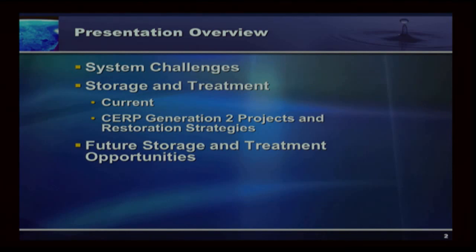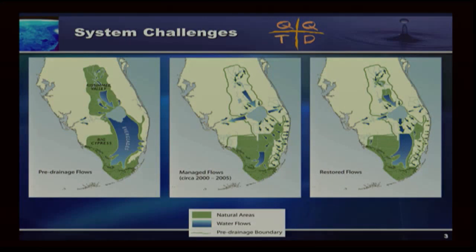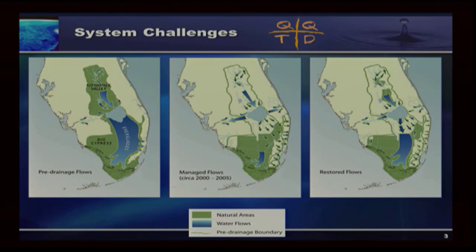I'd also like to touch on the U.S. Sugar option as well. For those of you that have been around a long time, you'll recognize these graphics we've used throughout the development of Everglades restoration over the last 15 years or so. These are some graphics that kind of frame up what we're talking about today on really the system challenges. Up at the top you see this four-square called QQTD — quality, quantity, timing, distribution.